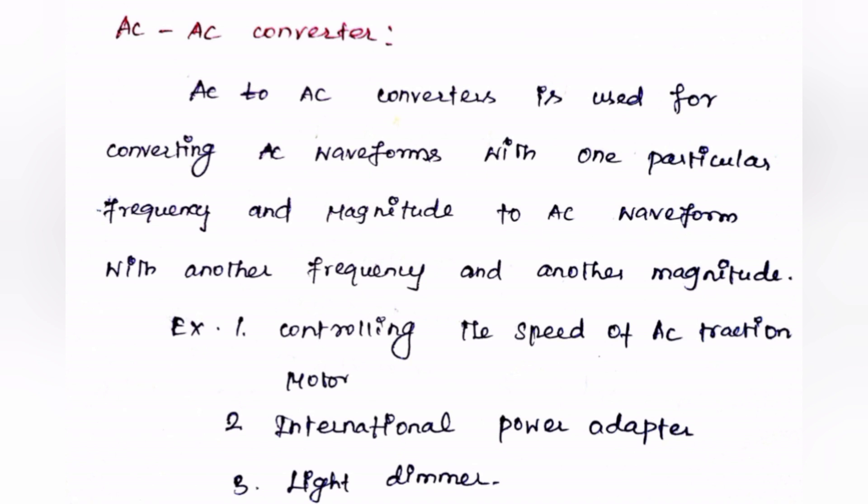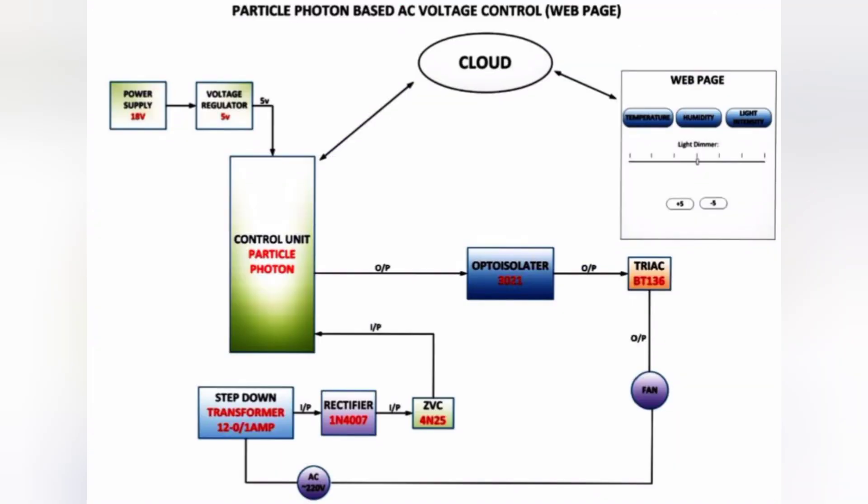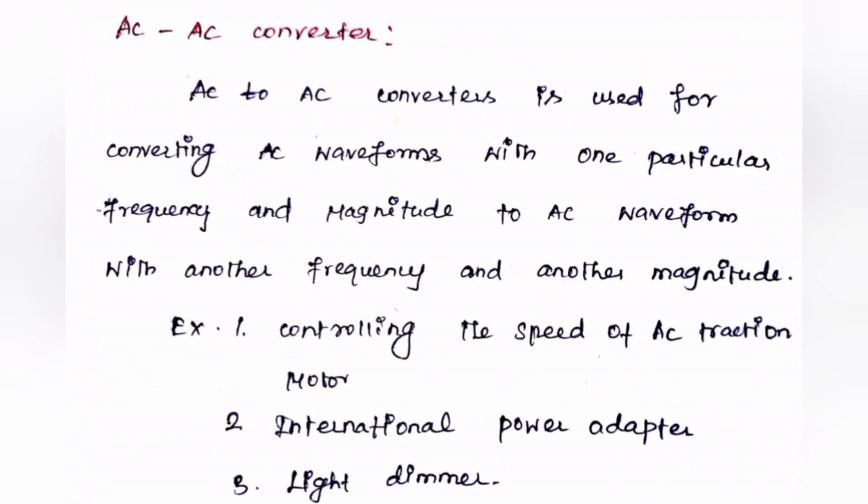AC to AC converter. An AC to AC converter is used for converting AC waveform with one particular frequency and magnitude to AC waveform with another frequency and another magnitude. What are the applications that require AC to AC converters? Controlling the speed of AC traction motors, international power adapters, and light dimmers. These are all the applications that require AC to AC converters.